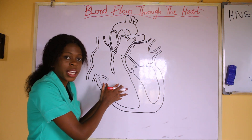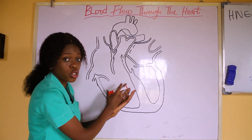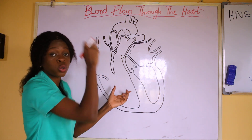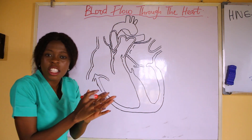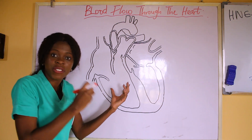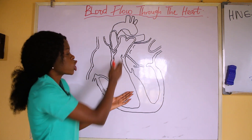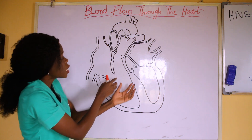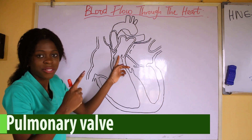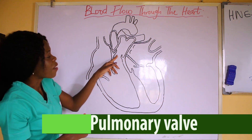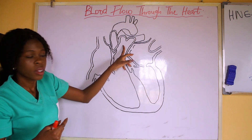This blood cannot remain in the right ventricle — it has to move on. The right ventricle contracts because it has to pump this blood to the lungs so that the lungs can cleanse the blood of waste products. When the right ventricle contracts, it pushes the blood up and it passes through the pulmonary valve. The pulmonary valve takes this deoxygenated blood to the pulmonary artery.